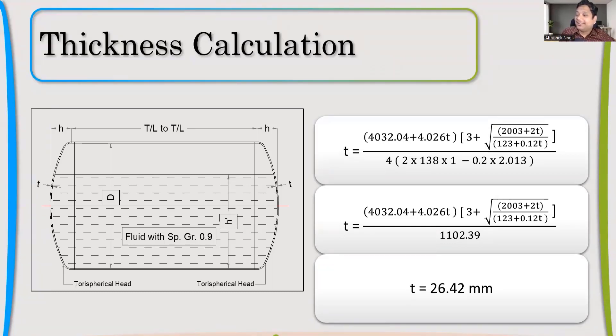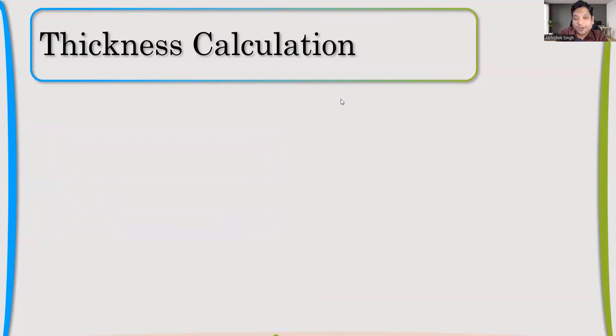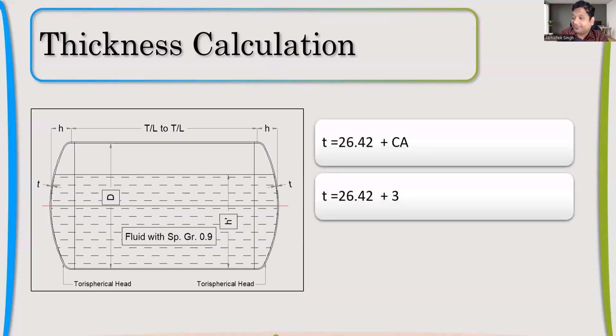What should be my nominal thickness? 28, 32, 30... Great. Now let us see what we will do. First of all, like I think Akash has already mentioned, we'll add the 3 mm corrosion allowance. Now I have added 3 mm corrosion allowance. My minimum design thickness is now 29.42. Now tell me, what should be my nominal thickness?